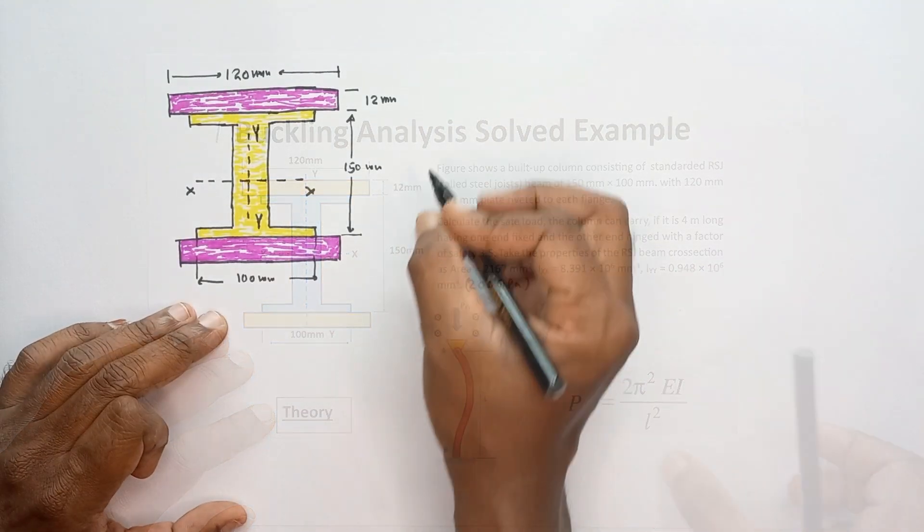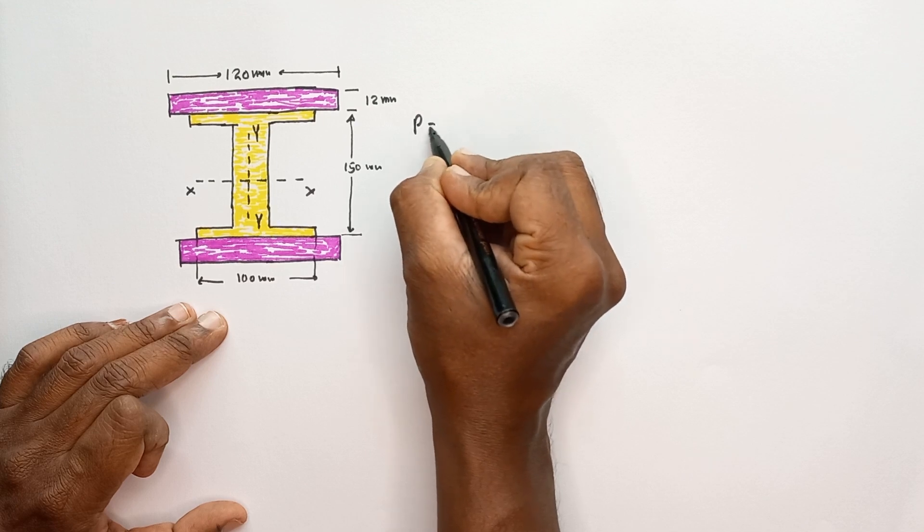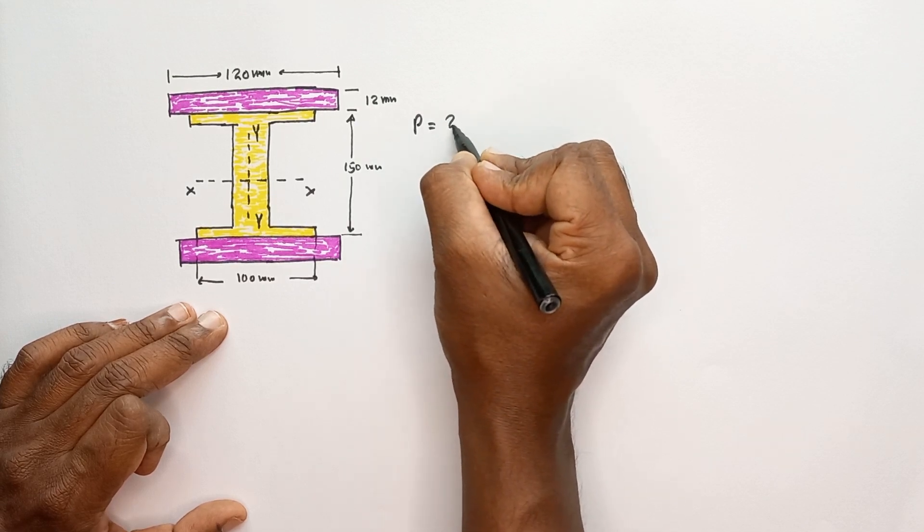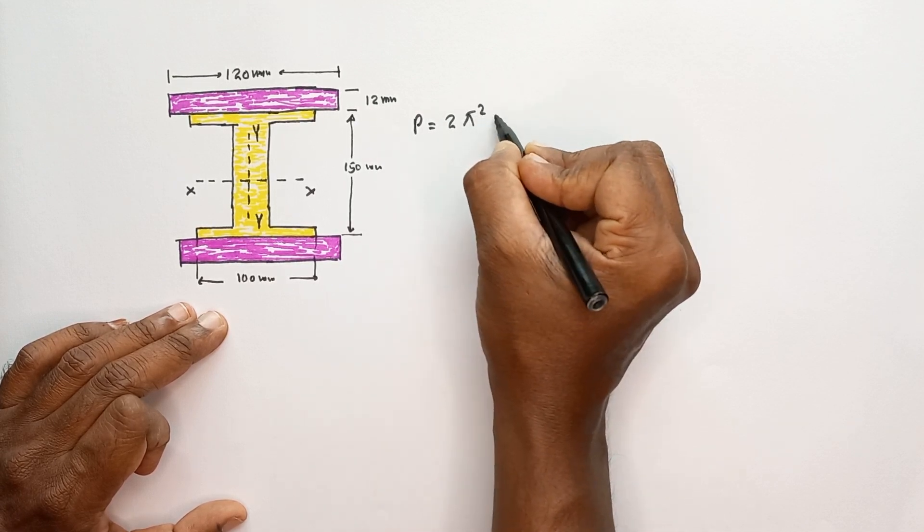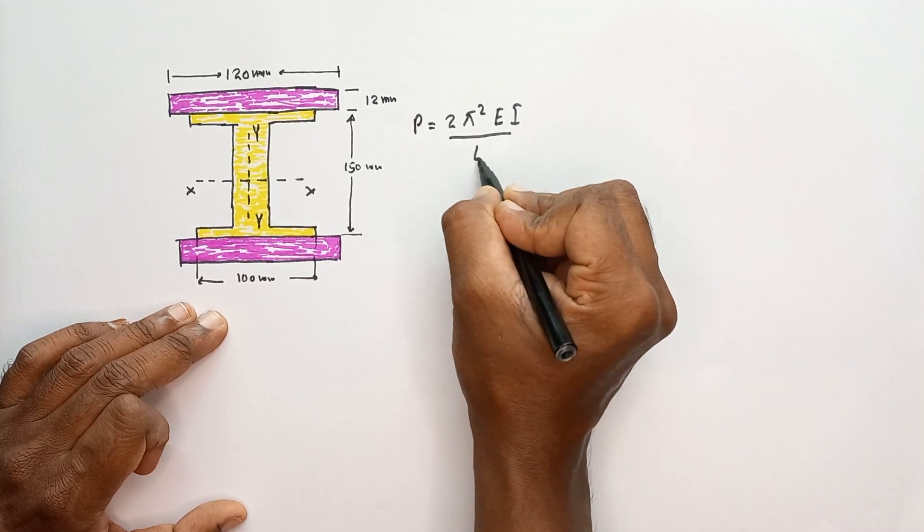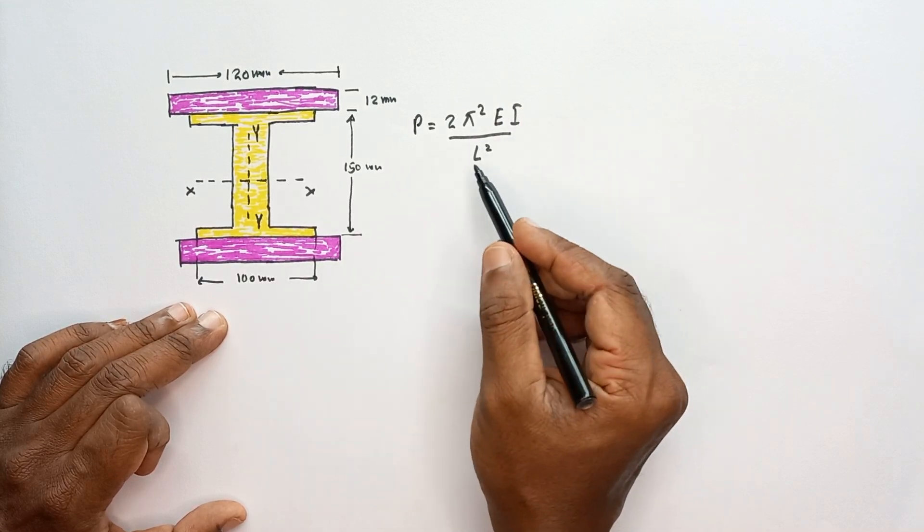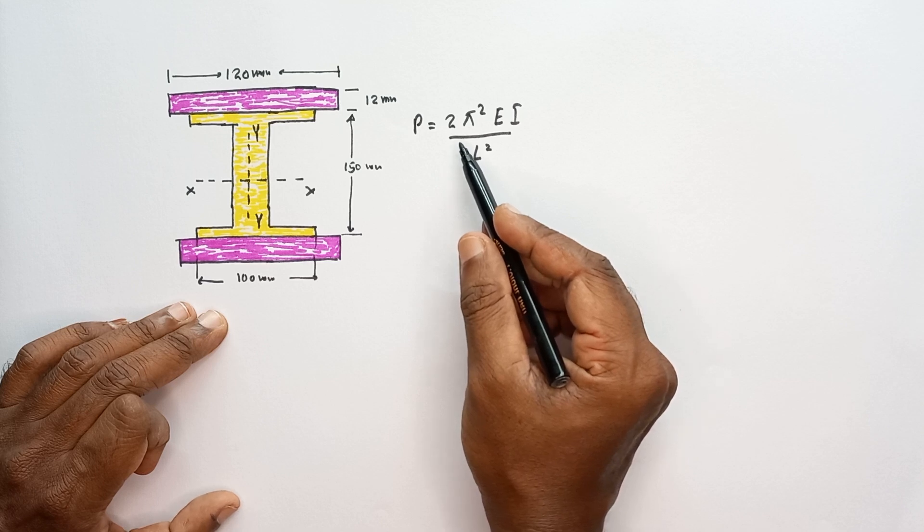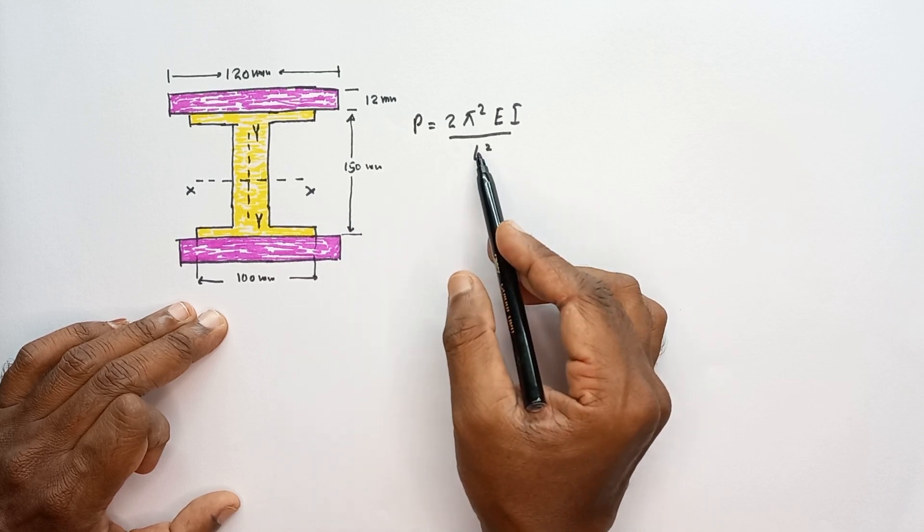Okay, so Euler buckling load equation, P is equal to 2π²EI divided by L squared. This is the equation for one end pin supported and other end fixed supported situation. This is the Euler buckling load equation.